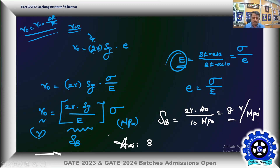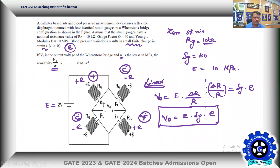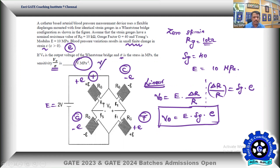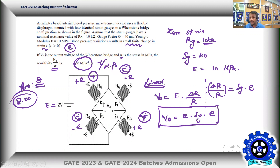The answer is 8 V/MPa. The unit is volts per mega-pascal as required. If decimal places are specified, it would be 8.00. This is an interesting problem exploiting the basics of strain gauges in a full passive bridge, which performs perfectly linear transduction.